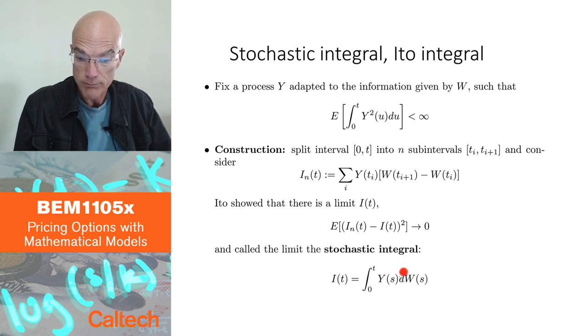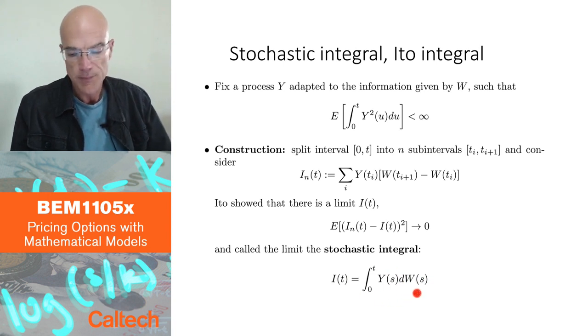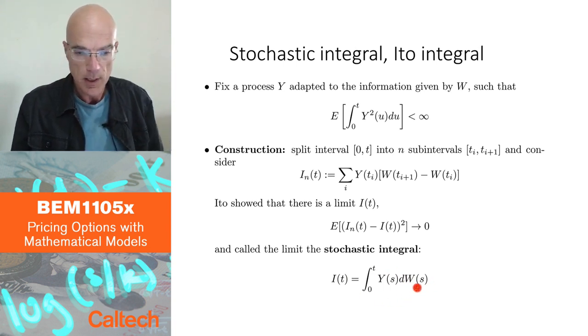So this would be your gains process, your profits and losses by holding Y of S shares at time S and then the money you make is Y of S times the change in price, dW S. So we want to give a sense to this. We want to define this, how to construct this in continuous time.